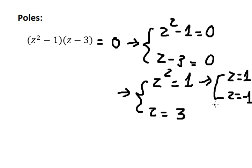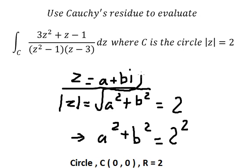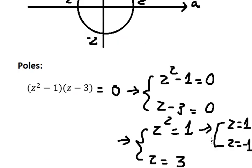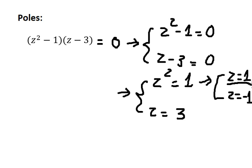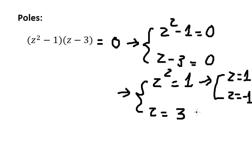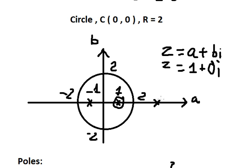We know that z equals one means z equals one plus zero·i, so a equals one and b equals zero — that is this location. Similarly for negative one, b equals zero, and we also have positive one and positive three. So we can see that we have only two poles inside the circle.